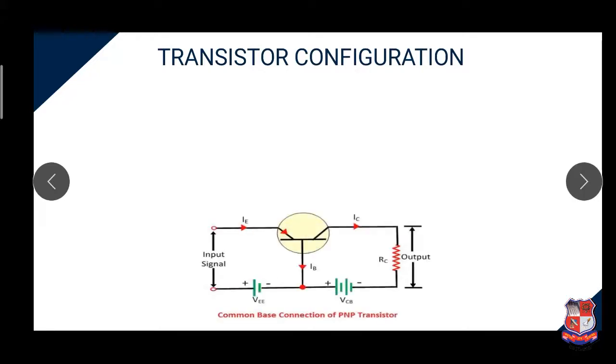In this video we will discuss transistor configurations. Transistor configurations refer to how the transistor is connected in the circuit. For example, one configuration is common base connection of PNP transistor. There are three types of configurations: common base configuration, common emitter configuration, and common collector configuration.